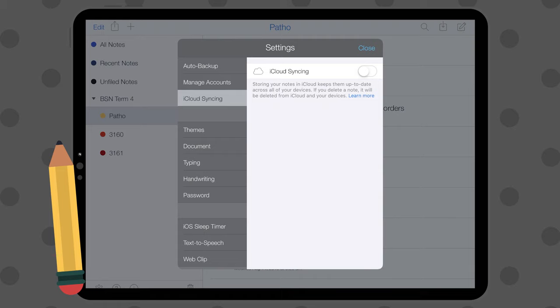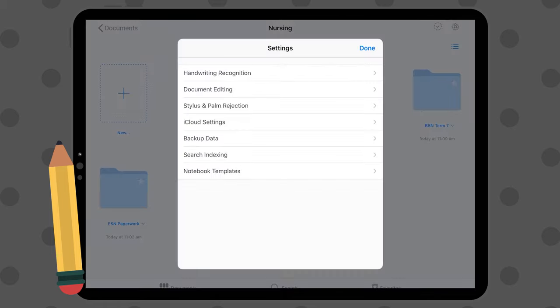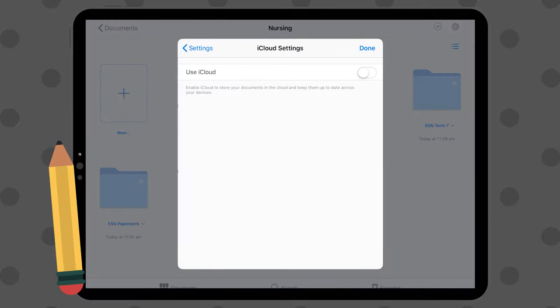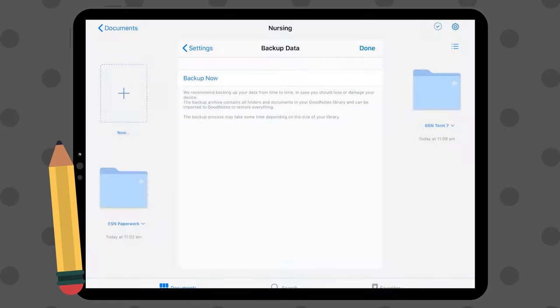However, backing up with GoodNotes 5 is more complicated as there isn't any outright auto backup feature, which is funny because it was there in GoodNotes 4. But rather, you can choose to manually backup and then export to a storage platform of your liking.